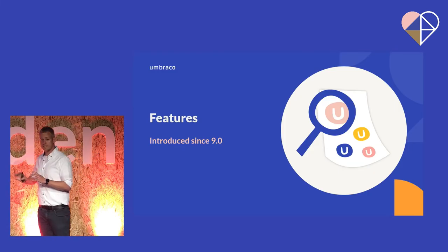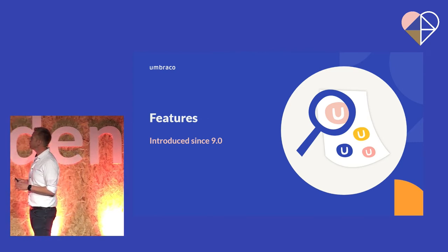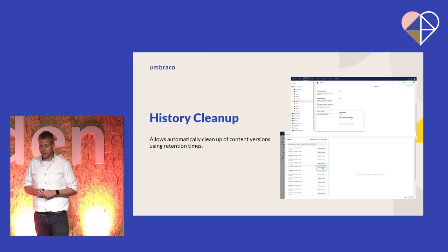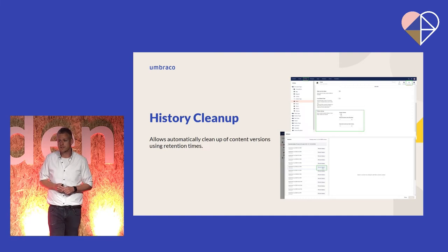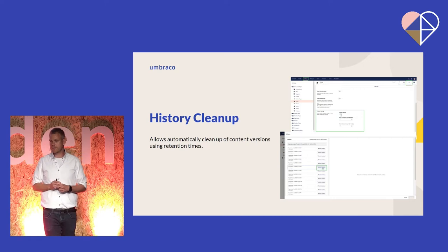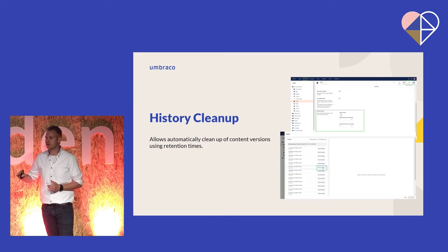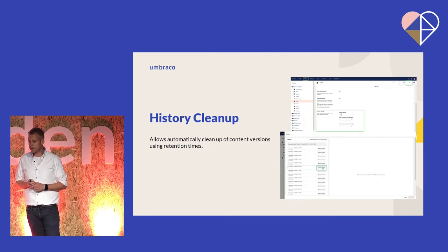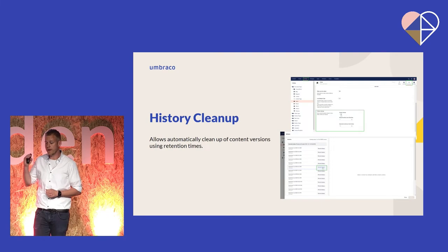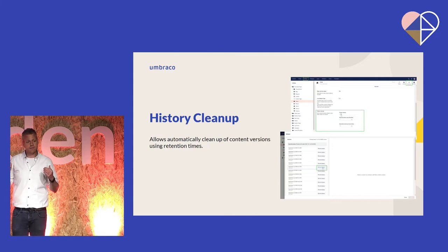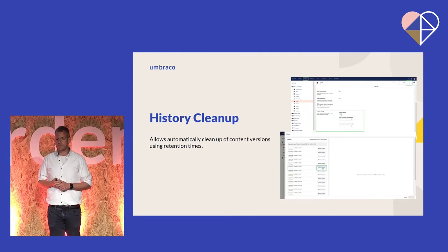So those were the new things in version 10. But since we released 9.0, we also introduced a lot of features. Let's look at some of those. The first one is what we call history cleanup. Every time you publish some content in Umbraco, we save a history version. A lot of people don't even know this, and it just stores up a lot of storage. Now we introduced a feature where you can automatically clean those up. It's highly configurable — you can configure it on a global level, you can override on document types, and you can even, on a single content item, prevent it from ever being cleaned up.